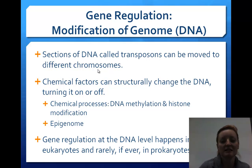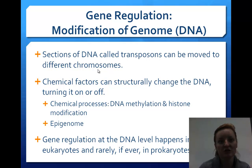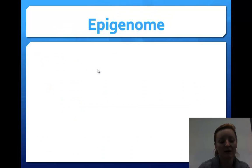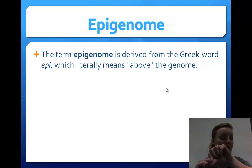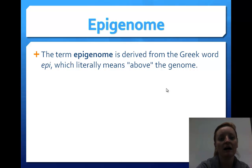Gene regulation at the DNA level happens in eukaryotes and rarely ever in prokaryotes, as prokaryotes' DNA is so simple that modifications don't usually occur. The epigenome is derived from the Greek word 'epi,' meaning above the genome — just like epidermis is on the outside of your body, epi means above, meaning it's above genetics.